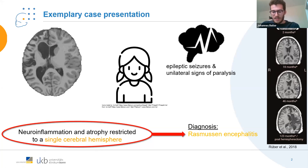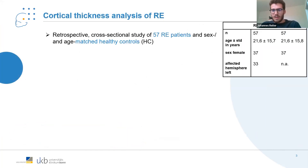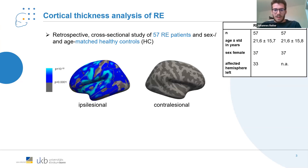The problem with this disease is that it's not very well understood because there are so few cases of this condition. But in our hospital we have a relatively high number of Rasmussen's encephalitis patients, and therefore we performed a cortical thickness analysis comparing around 60 Rasmussen's encephalitis patients with matched healthy controls. The results showed that, as expected, on the ipsilesional hemisphere there was widespread atrophy observable, while on the contralesional hemisphere there was no significant atrophy.